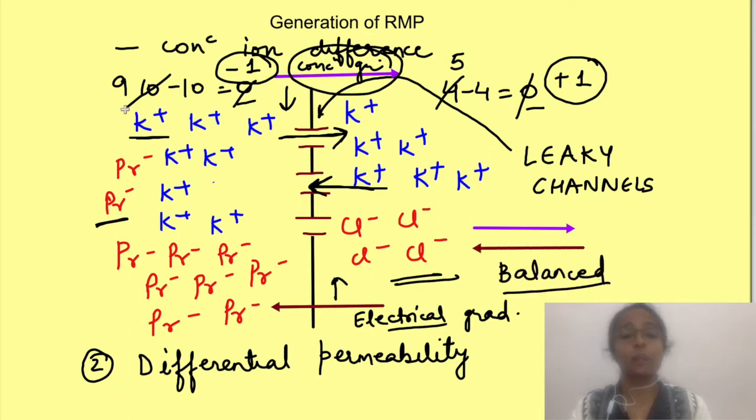So at this point there will be no net movement of charges. And due to difference in positive and negative charges on each side of the membrane, there is a development of the potential across the membrane.